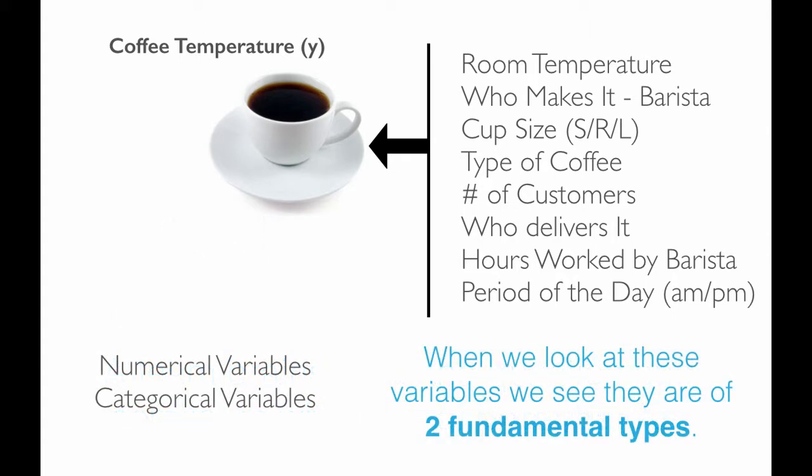Now, when we look at these variables, we see they are of two fundamental types: they're either numerical variables or what we would refer to as categorical variables. And that's important to us because we need to understand that in order to understand the application of the statistical tools.